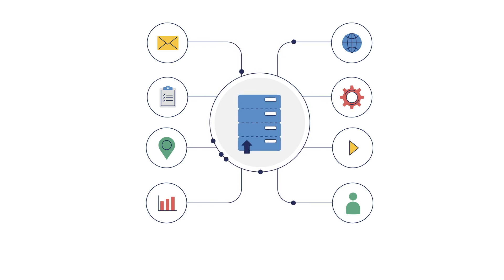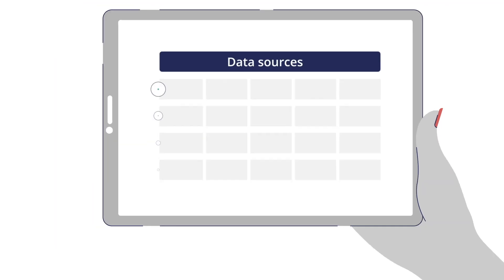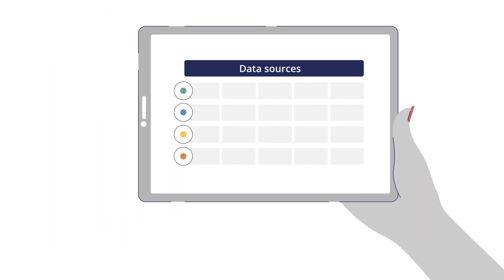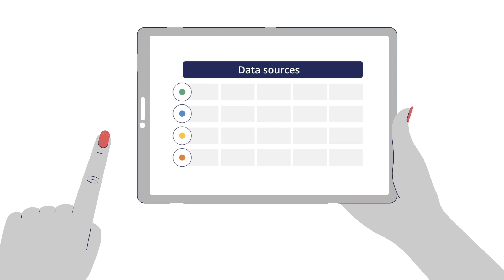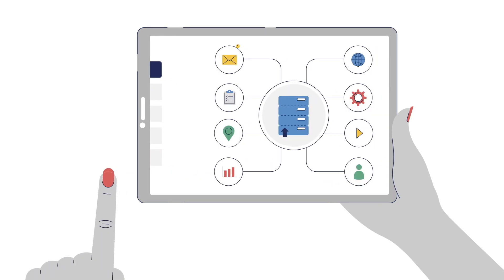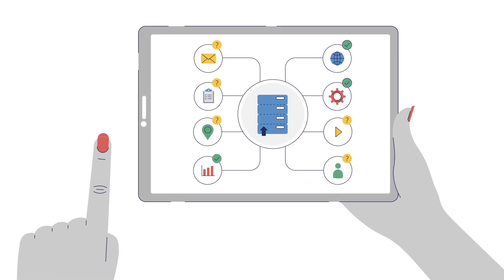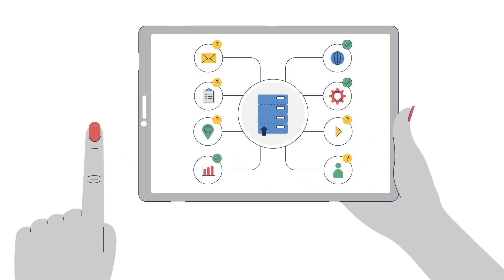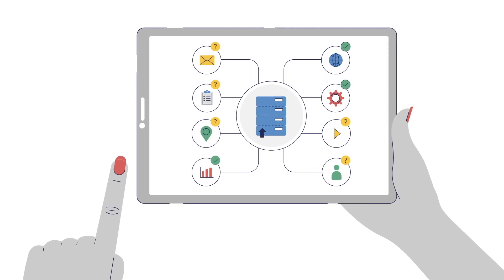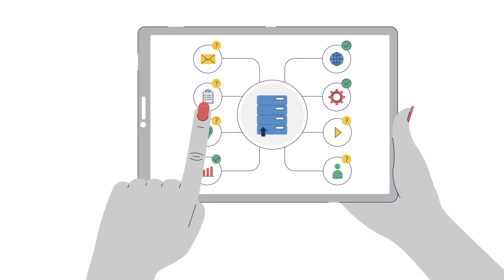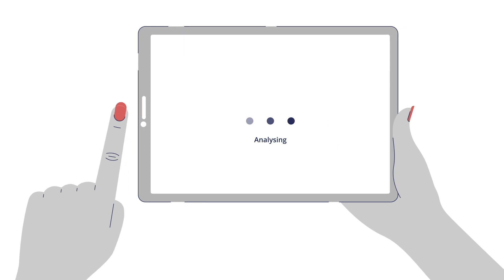Once Jane has an understanding of the data pipeline and what types of data are available, she returns to the problem that the company is trying to solve. Based on her discussion with the company's board and the data available to her, she chooses the appropriate types of statistical analysis she can perform on the various data sets.